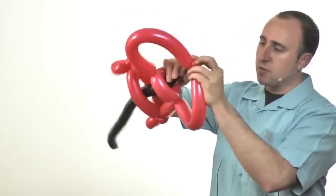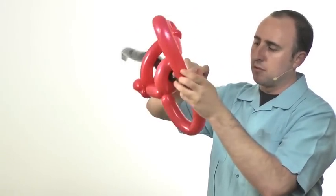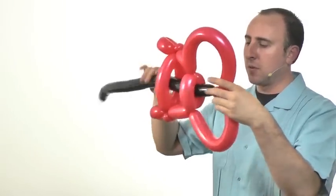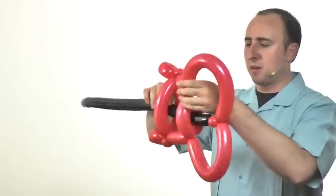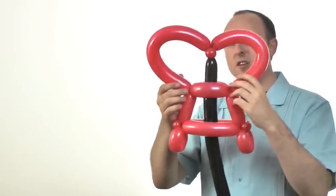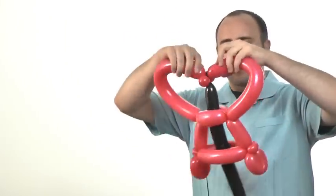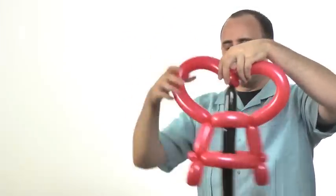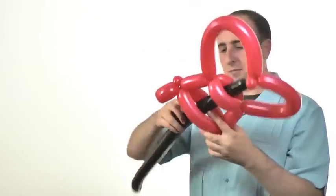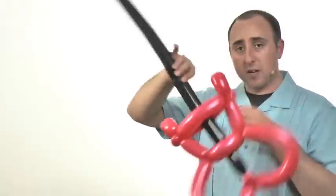Wrap it around a few more times. There we go. Much better. Straighten it out. Once again, if this part here is kinked on you, just go ahead and try to straighten that out a little bit. There we are. And now we have the neck of our guitar.